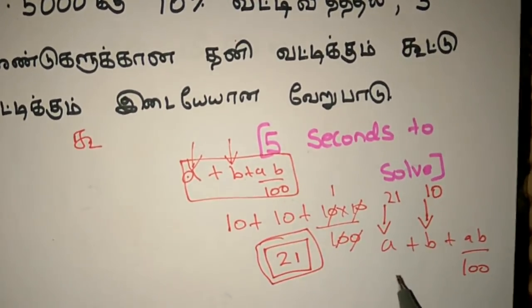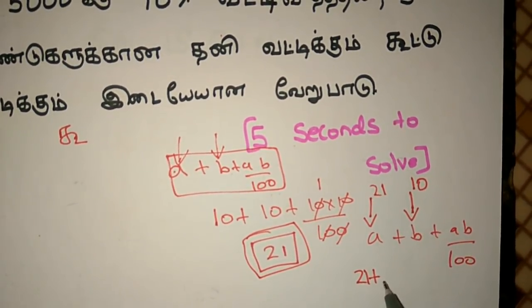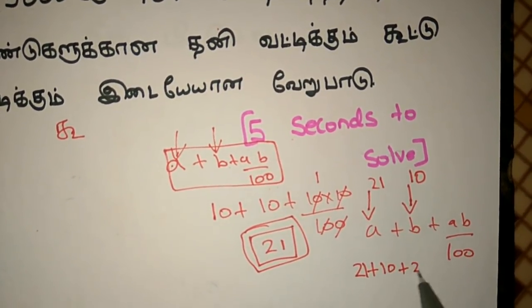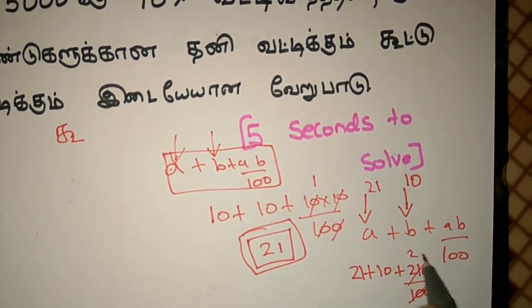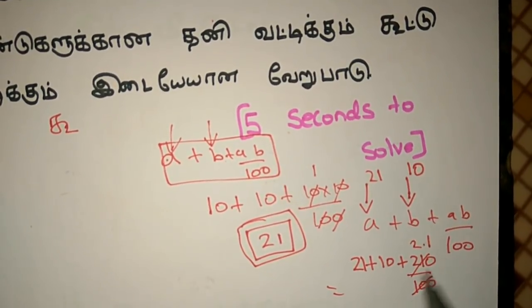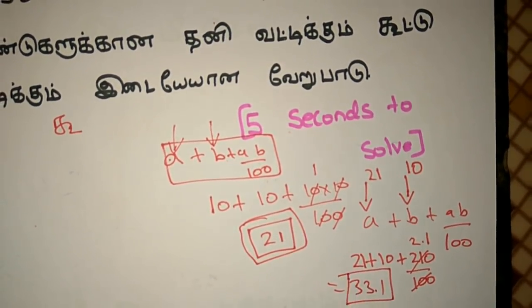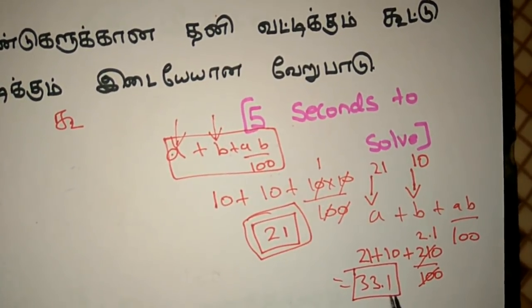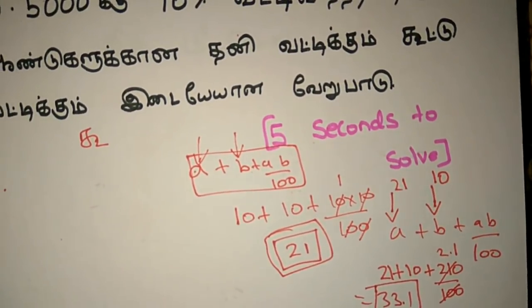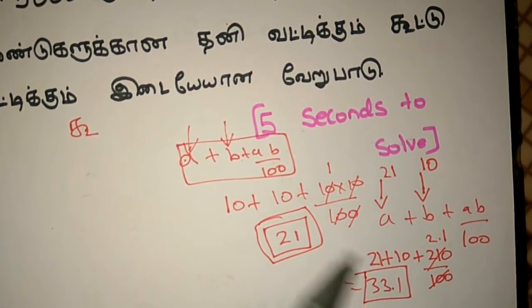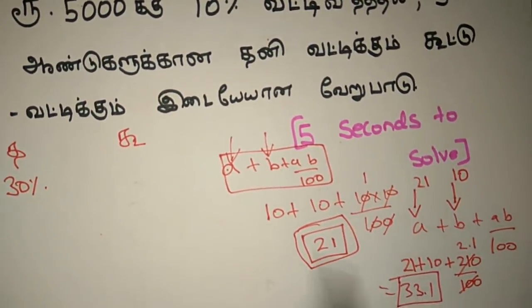So we add 10. Here we add 1 plus 10. We add 2. Here we add 1 plus 10 plus 2. So we add 1 plus 3. Now we add 4. Now, we add 1 plus 10. So this is 3 plus 3.